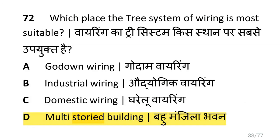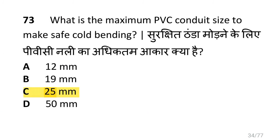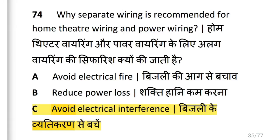Which place is the tree system of wiring most suitable? That is multi-storied building. What is the maximum PVC conduit size to make a safe cold bending? That is 25 mm. Why is separate wiring recommended for home theater wiring and power wiring? Because to avoid electrical interference.